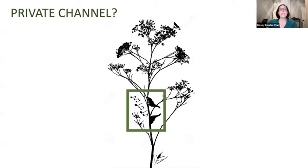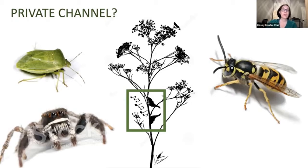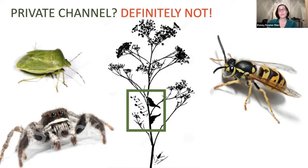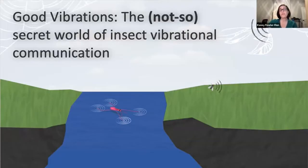Why has vibrational communication become so prevalent in the animal kingdom? It used to be thought that this was a private channel — insects could talk to one another without predators overhearing. It turns out most predators — stink bugs, spiders, wasps — can detect vibrations as well, so it's definitely not a private channel. In my research, I study the use of substrate-borne vibrations in communication and the reasons for such diversity of signals, mostly with treehoppers. The title needs a modification: it's really a 'not-so-secret world' because pretty much most organisms can detect it.